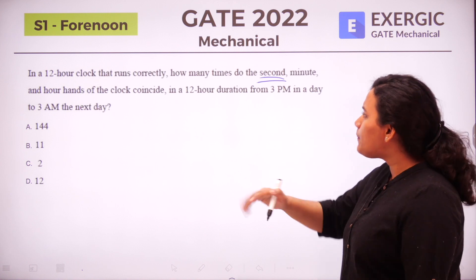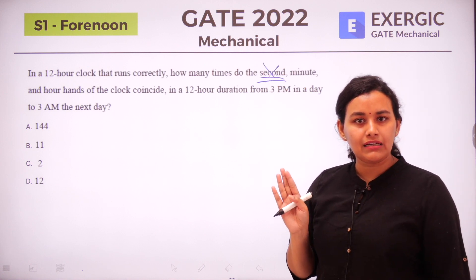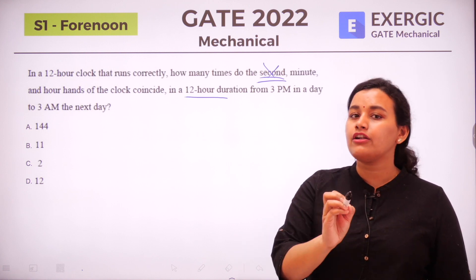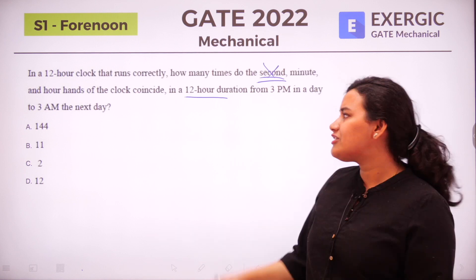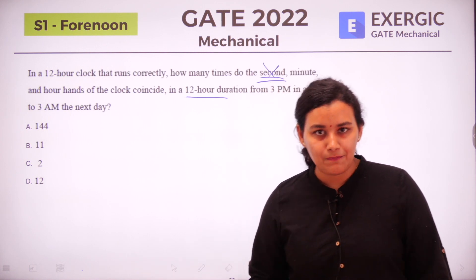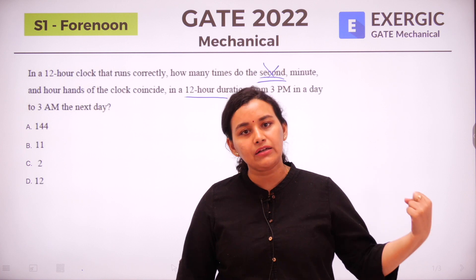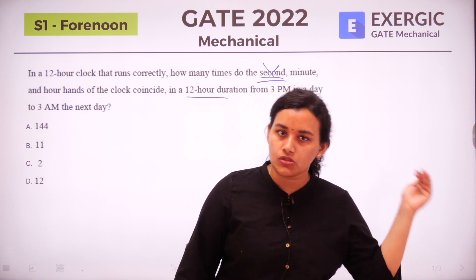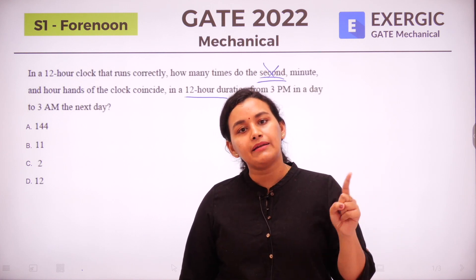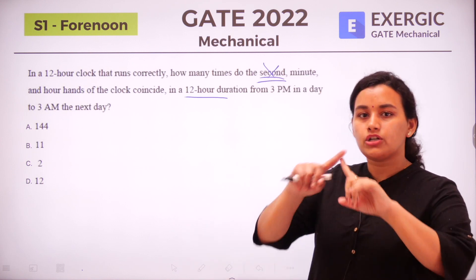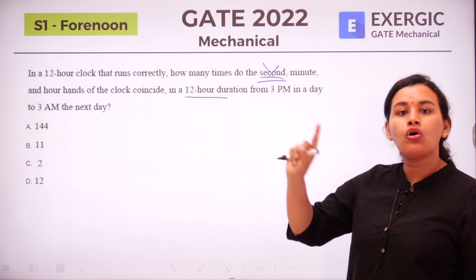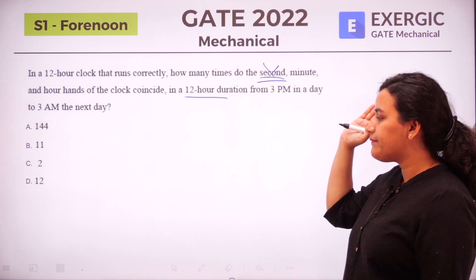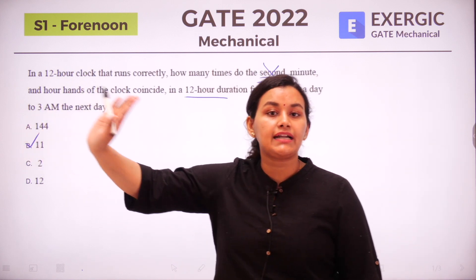Let's start solving this question. Suppose the second hand was not given — if we just look at the minute and hour hand, everybody knows that in a 12-hour duration they are going to meet 11 times. Between every hour the minute and hour hand meet once: 1 o'clock to 2 o'clock once, 2 to 3 once, and so on. But from 11 o'clock to 1 o'clock they meet only once, at 12 o'clock. So in a 12-hour cycle they coincide 11 times. Without the second hand, you would directly mark option B as 11 times.